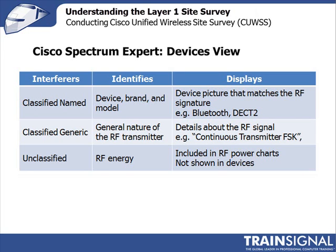Examples of classified name devices would be a microwave oven or Bluetooth. A classified generic is when the Cisco Spectrum Expert has enough information to define the nature of the RF signal but cannot identify the device — for example, it might identify it as an FSK (frequency shift keying) device, which could be a cordless phone. Unclassified means it is capturing some RF but is not able to identify the type of interference or the device.